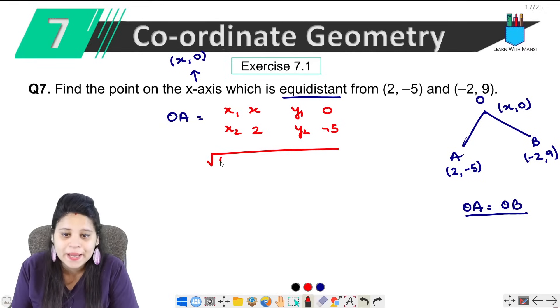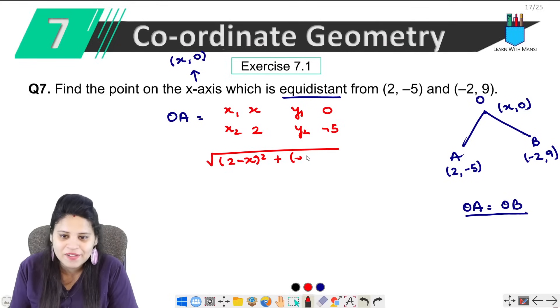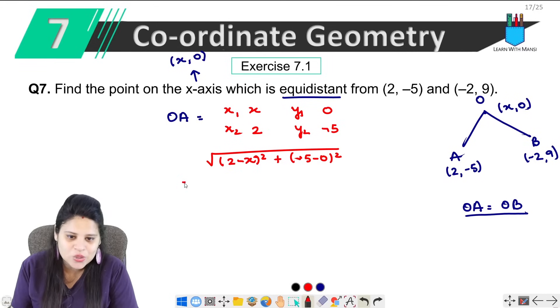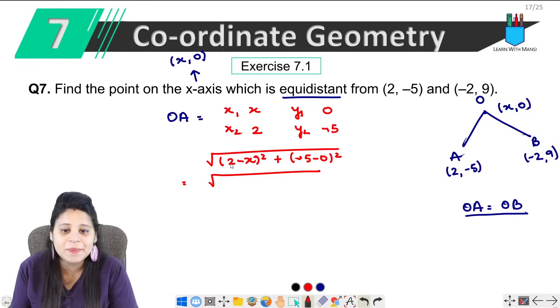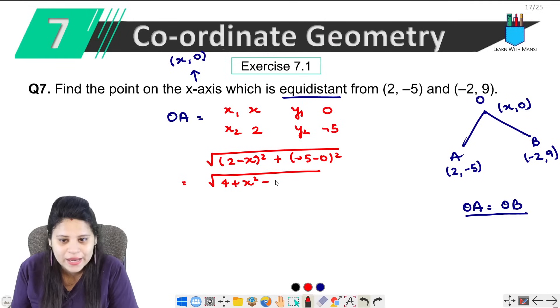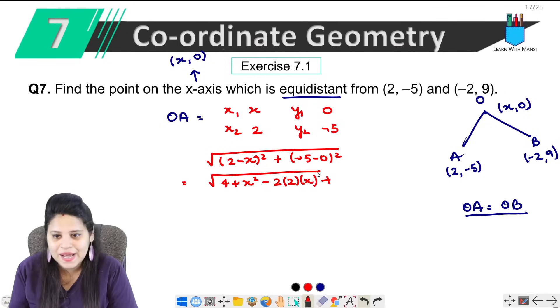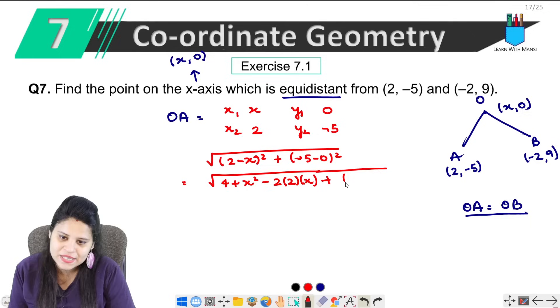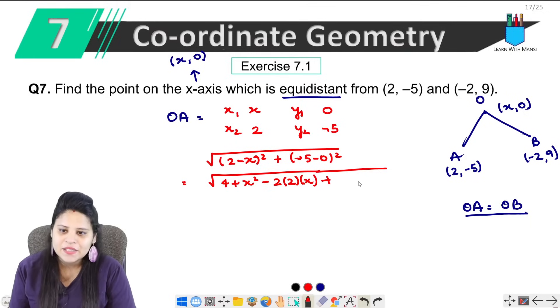Let's put it in the formula. So (x2 - x1)² is (2 - x)² plus (y2 - y1)² is (-5 - 0)². So we have (a - b)² formula. a² means 4 plus b² means x², minus 2ab. What is a? 2. b is x. Then plus, minus minus plus, (-5)².